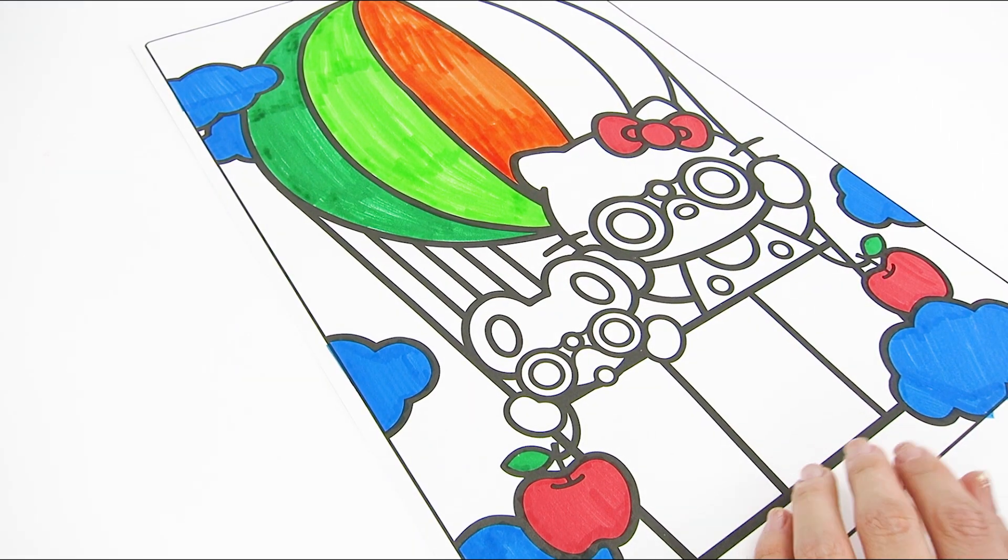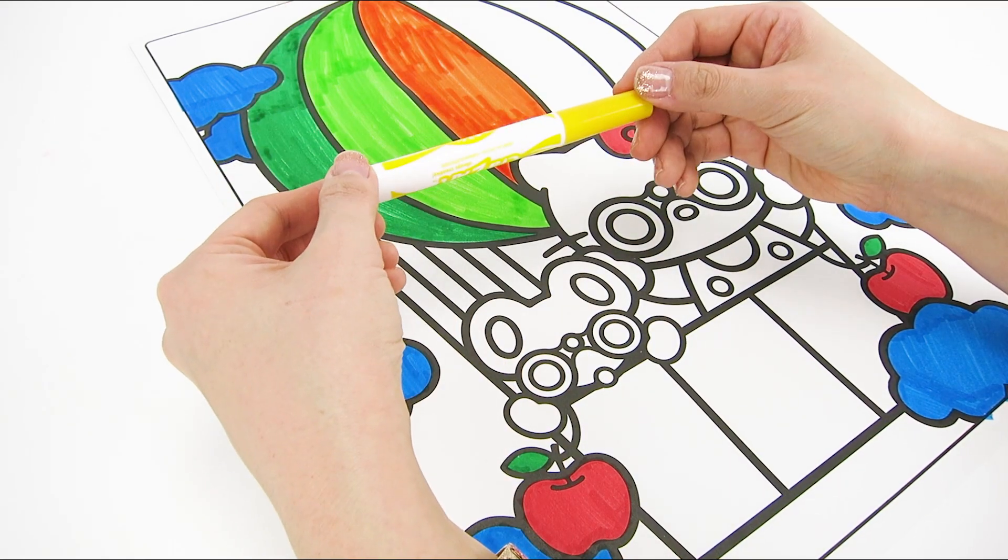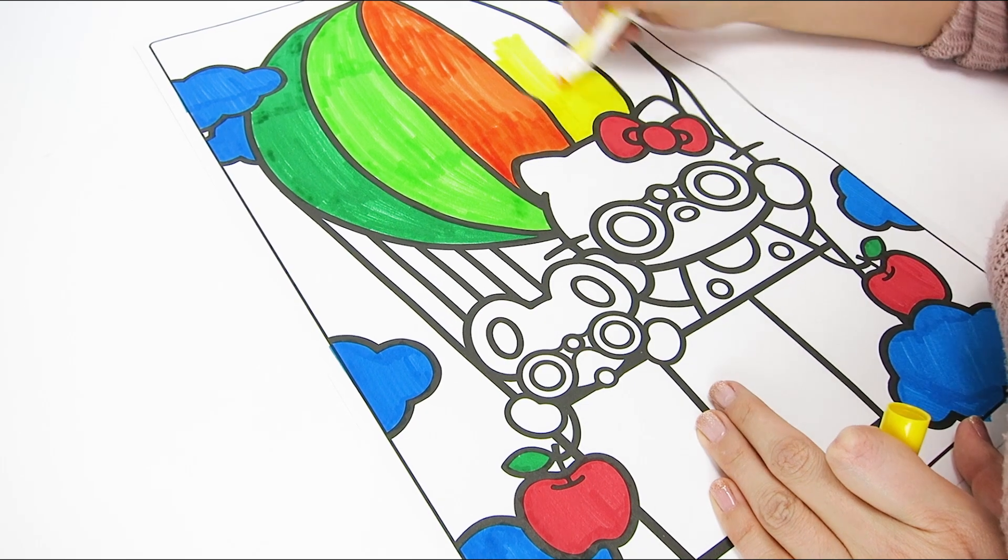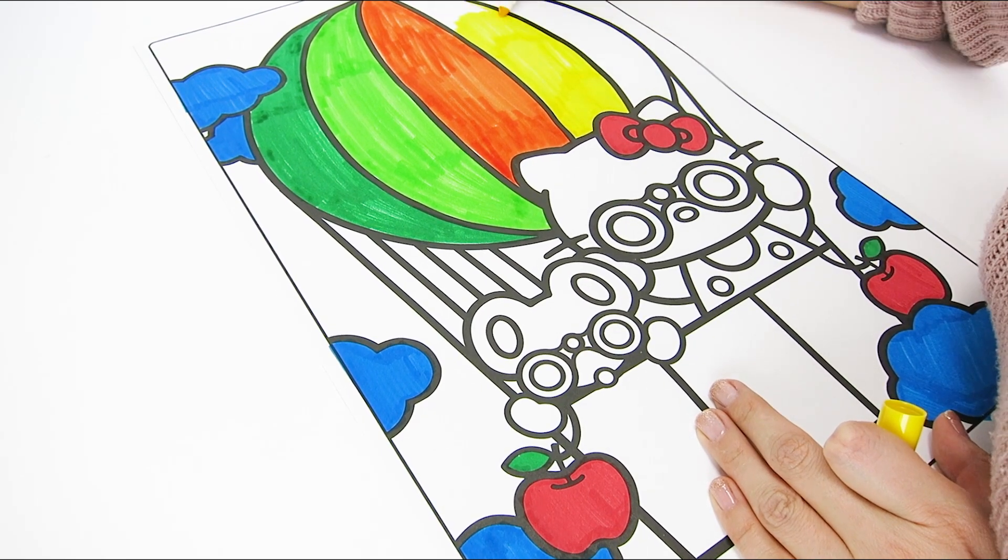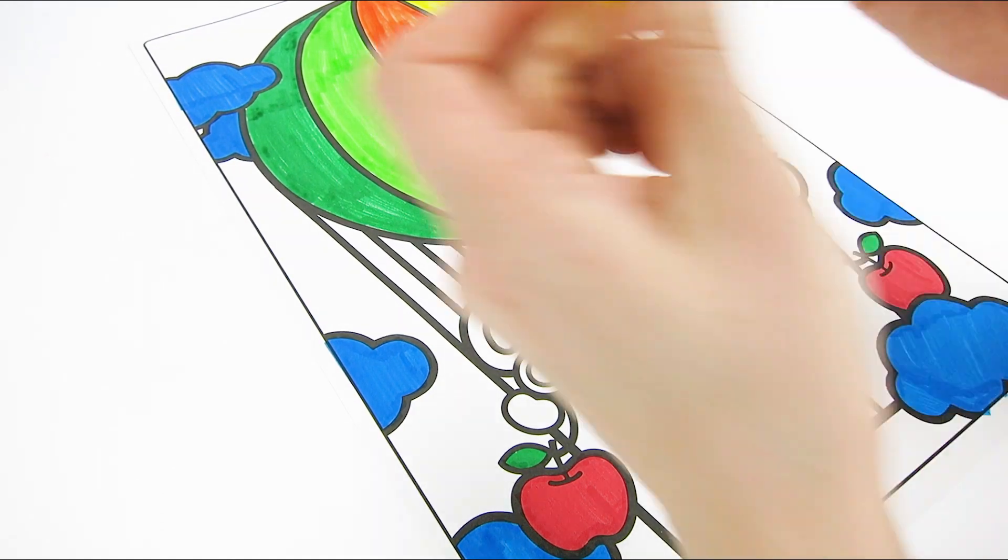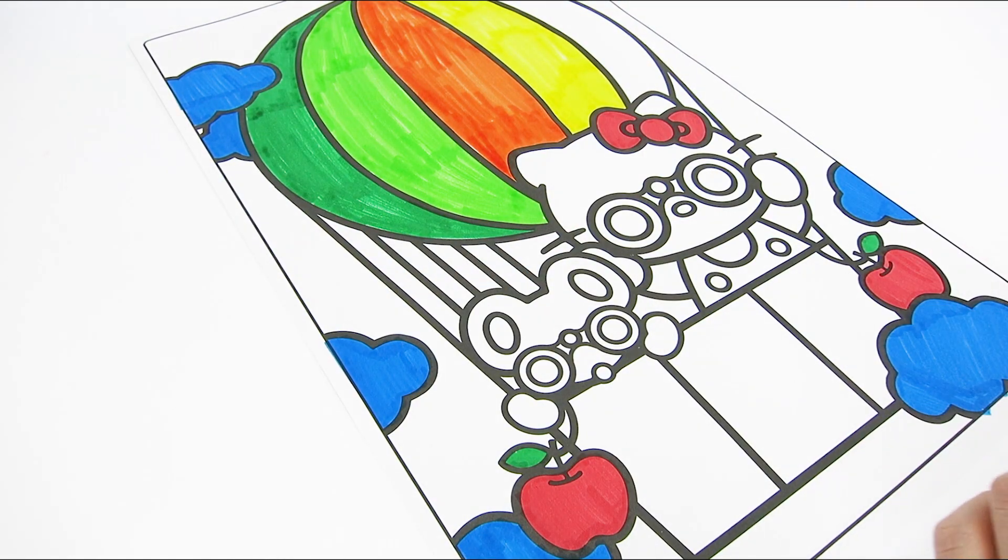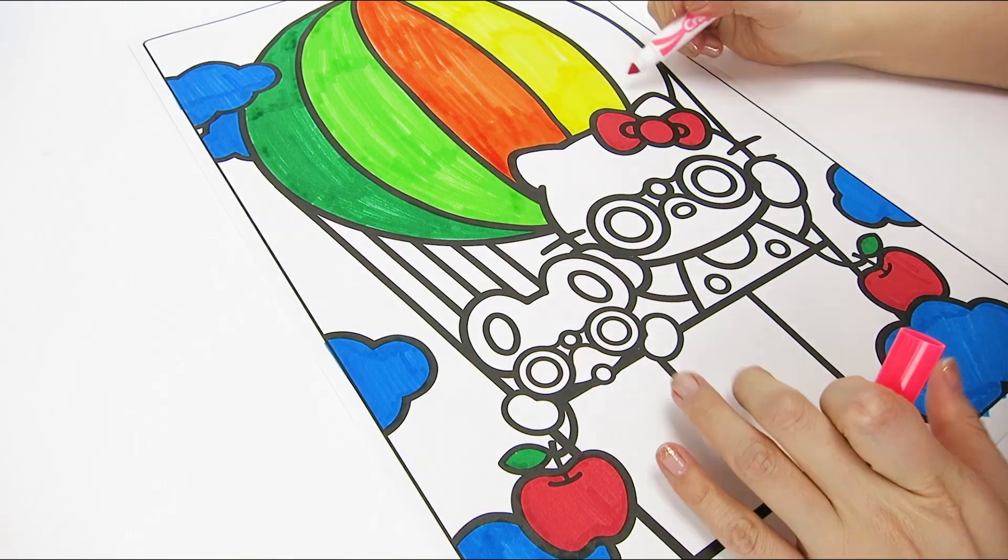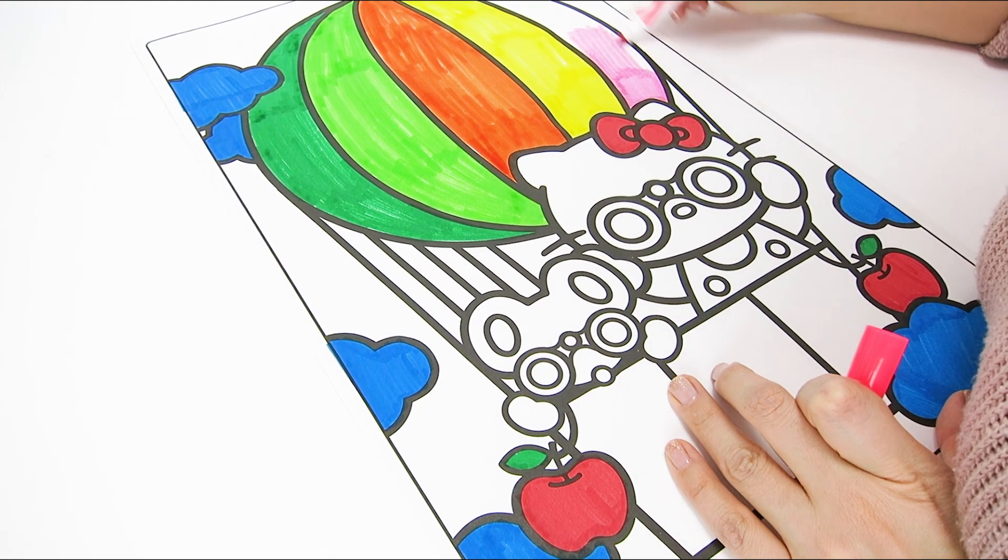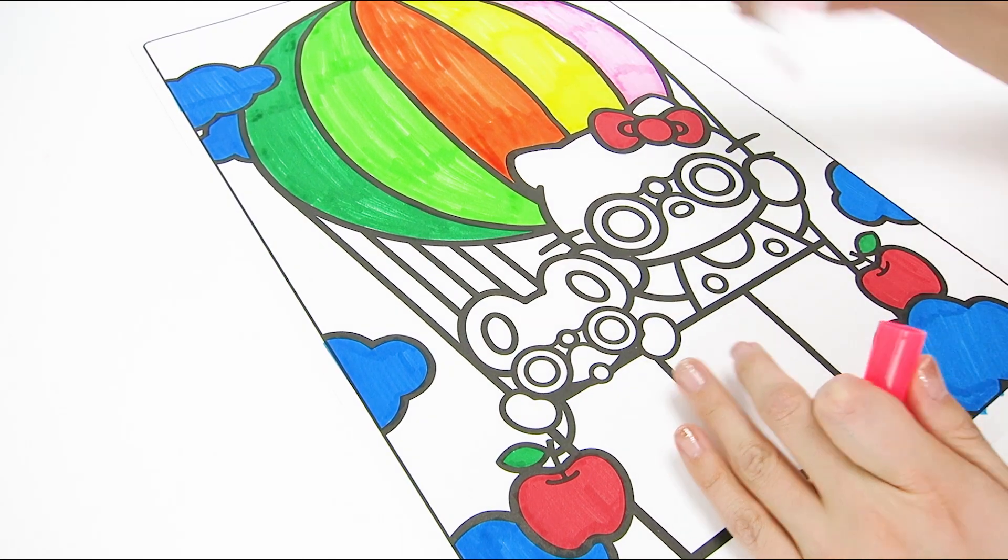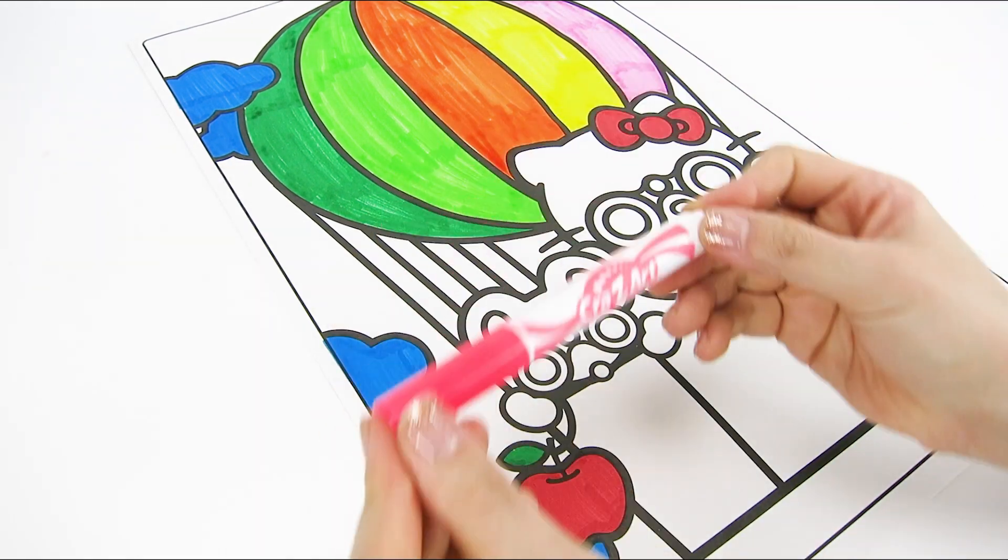Doesn't that look awesome? For the next stripe, we'll use yellow. Yellow and orange look really cool together too. And for the last stripe, we'll use pink. It really does look like bubble gum, don't you think?